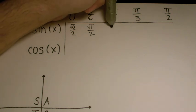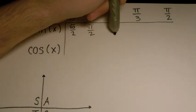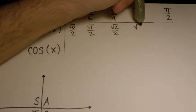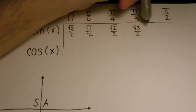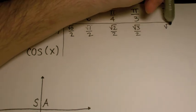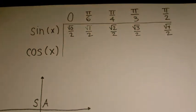The sine of π/4 is going to be √2 over 2. The sine of π/3 is going to be √3 over 2. And the sine of π/2 is going to be √4 over 2.